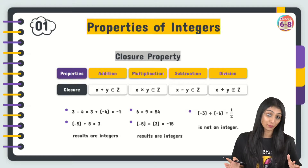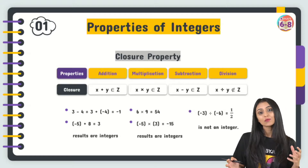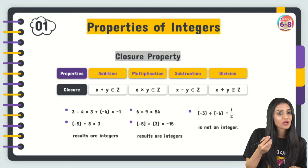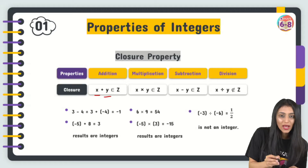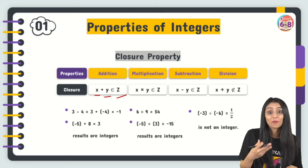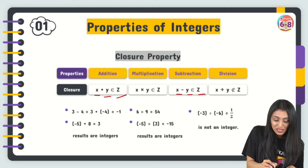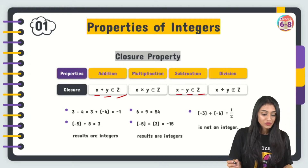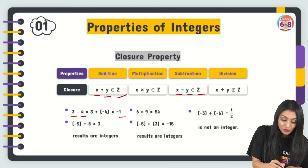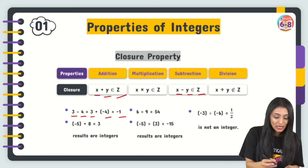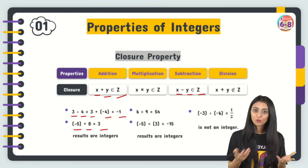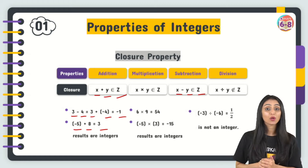The closure property under addition and subtraction states that the sum or difference of any two integers will always be an integer. If x and y are integers, then x + y belongs to integers (Z), and x − y also belongs to integers. For example, 3 − 4 = −1, and 3 + (−4) = −1. Also, −5 + 8 = 3 — all results are integers.